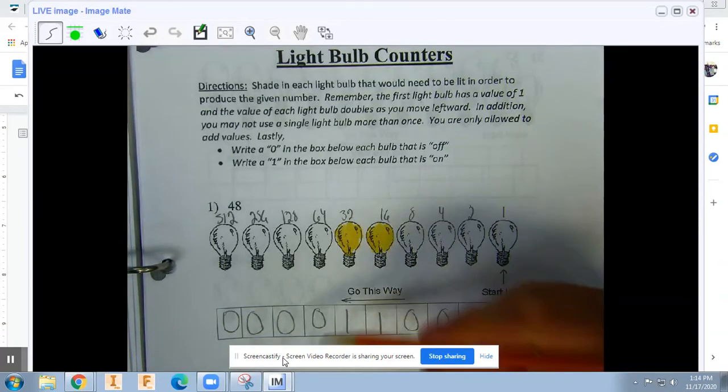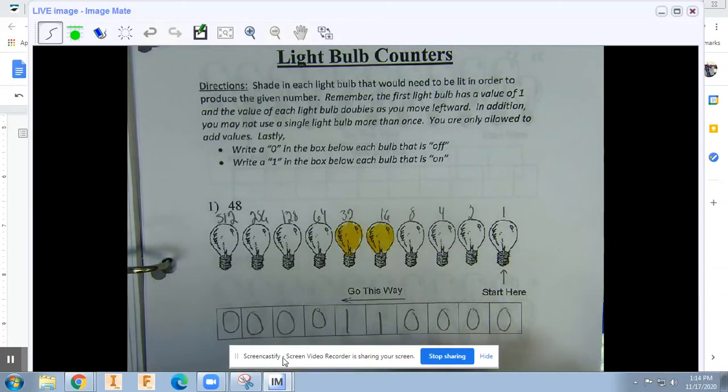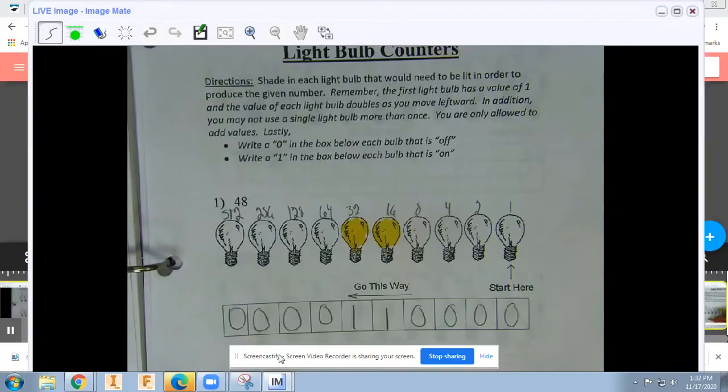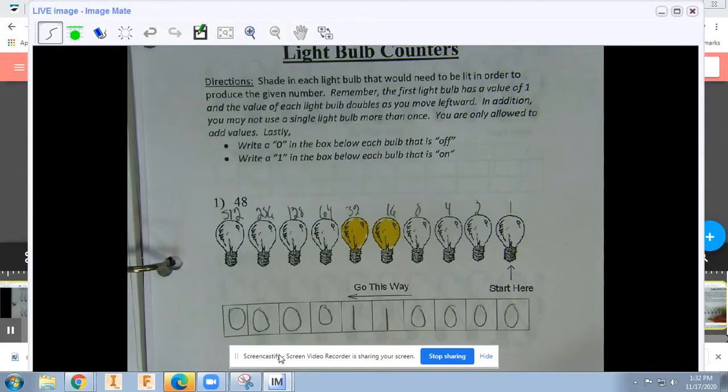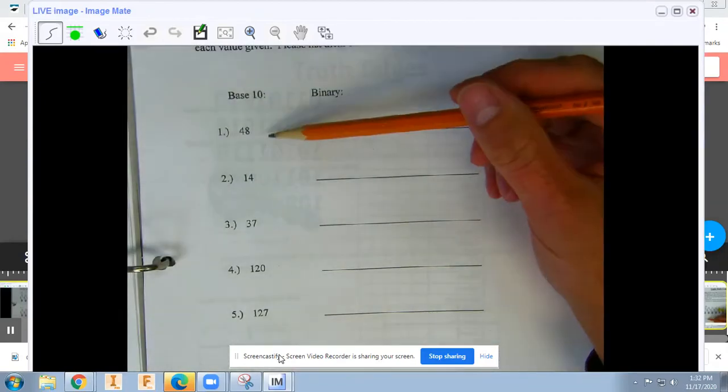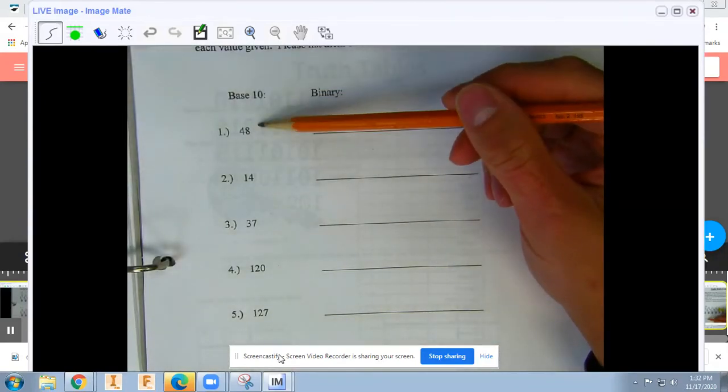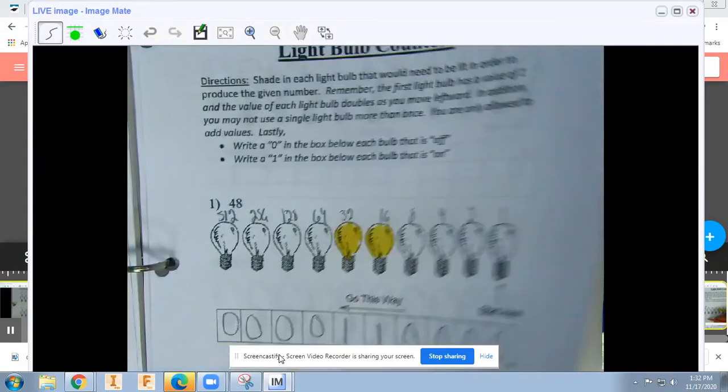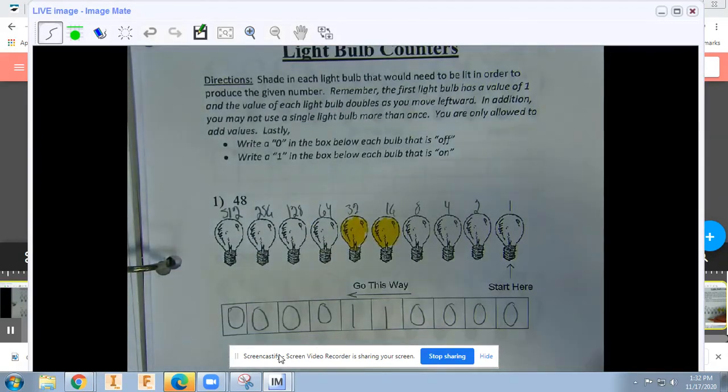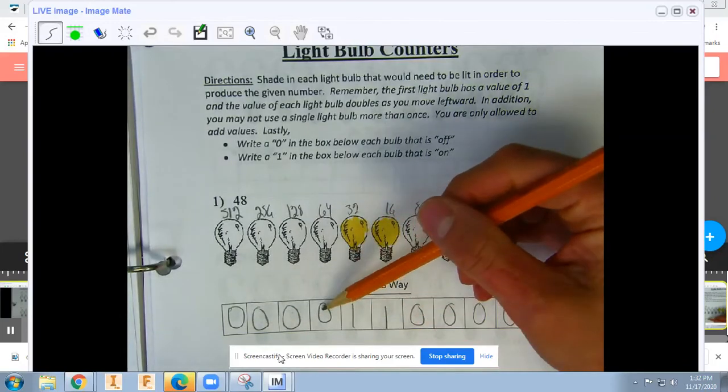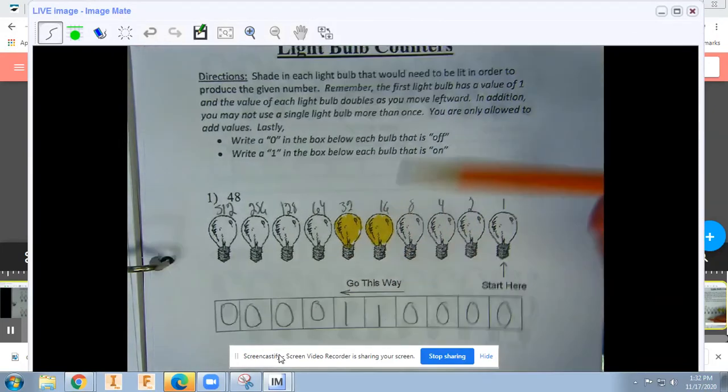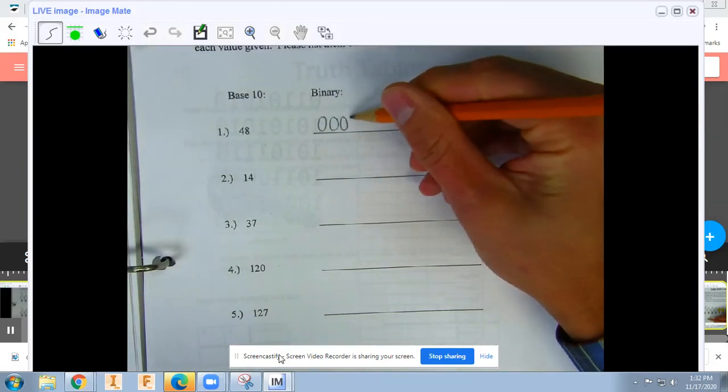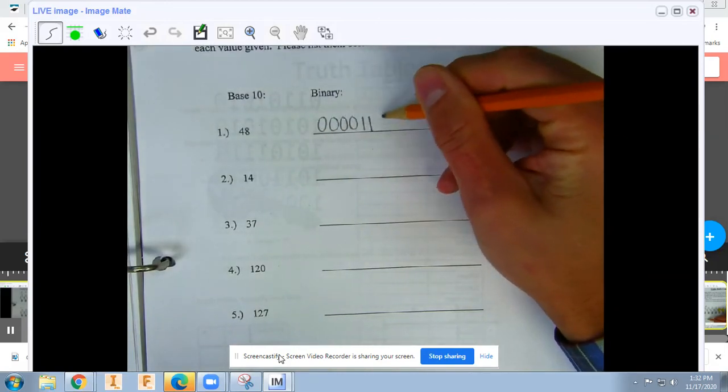Then we can practice going from base 10 numbers into binary. First one is 48. So we can go back here. It was 0, 0, 0, 0, 4 zeros, 2 ones, 4 zeros. So we write like this: 1, 2, 3, 4, 1, 1, 1, 2, 3, 4. And then we cross off all the zeros working left to right until we reach a 1.